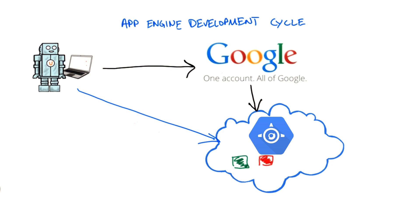And once you've done that, it's time to run your applications on computers in the Google data centers. So with just a click or two, you can deploy all of that great code to App Engine. And of course, you can have many applications running there.